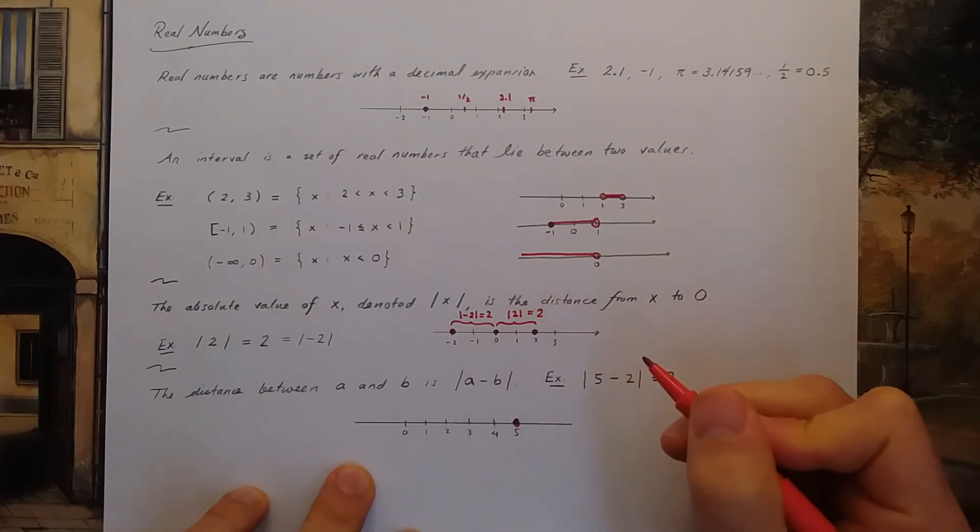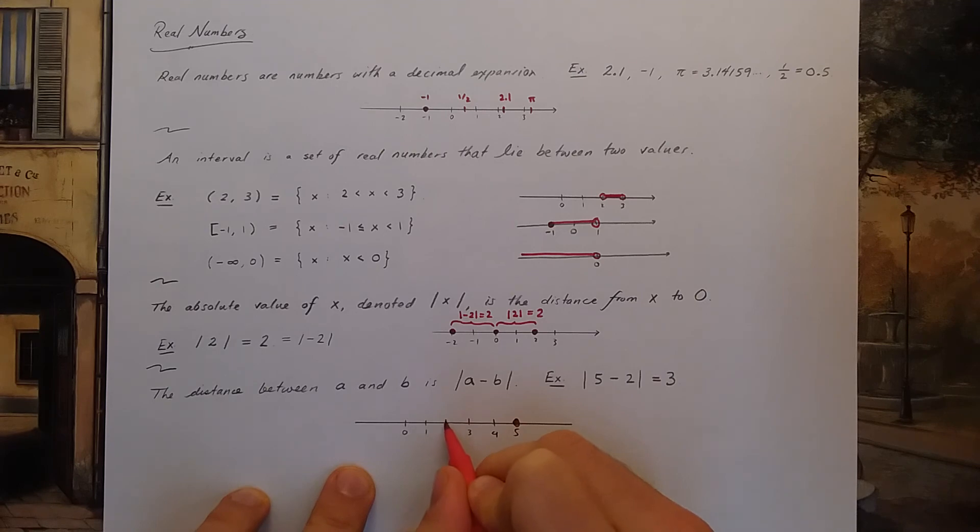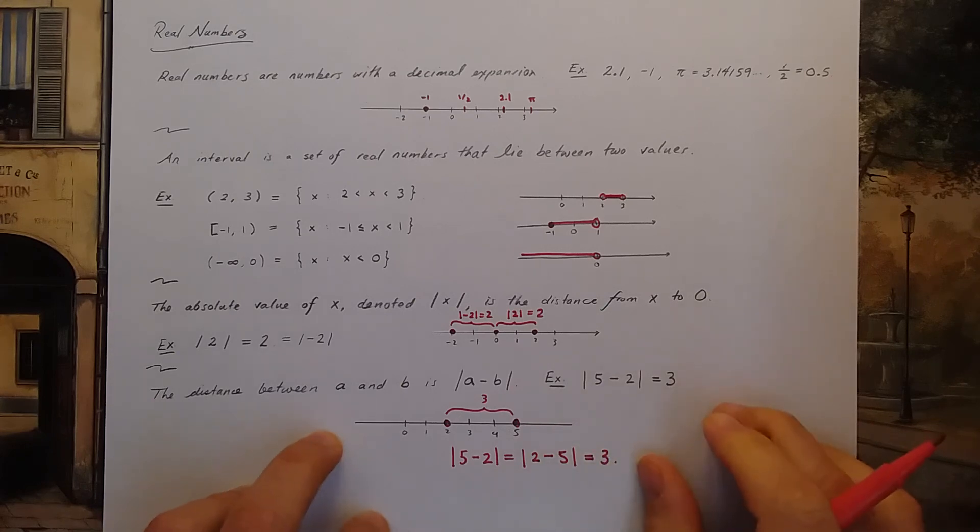And this distance, the distance between them, is 3. So that means the absolute value of 5 minus 2 is 3. You can also say this is the distance between 2 and 5 because you're using the same two numbers. These are both equal to 3. Okay. I'll see you next time.